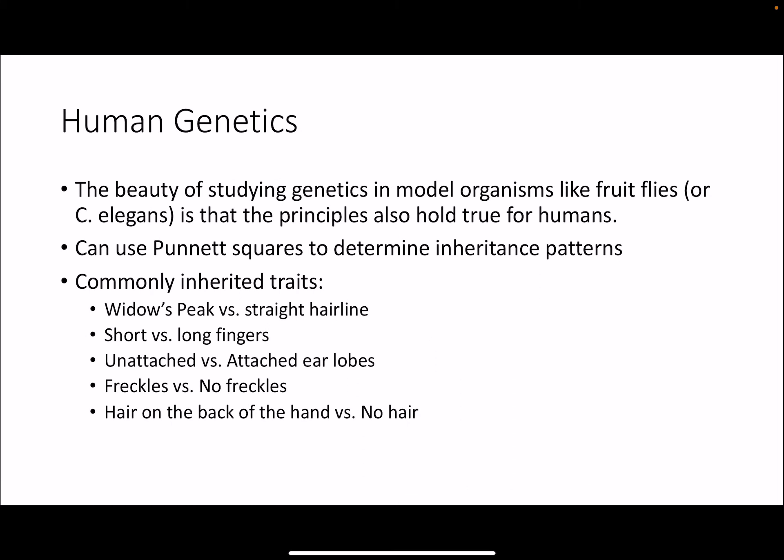The beauty of studying genetics in model organisms like fruit flies or worms is that the principles of genetic inheritance also hold true for humans, because we all arise from a common ancestor due to evolution. So we can use Punnett squares to determine inheritance patterns in humans. There's a discussion board where we discuss seven commonly inherited traits like a widow's peak, the length of our fingers, and freckles. Go on to the discussion board, fill out the survey, and we can use that to track the phenotypic ratio in our class in your lab manual.